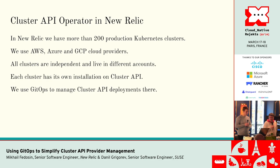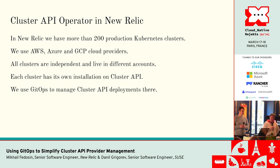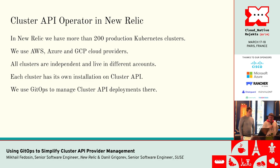I work at New Relic and we use this operator in our infrastructure. Our infrastructure is relatively big — we have more than 200 production Kubernetes clusters, about 300 in general, about 30,000 nodes, and we use three cloud providers: AWS, Azure, and GCP. For AWS we use EKS so we don't manage control planes there, but for Azure and GCP we manage those control planes ourselves with kubeadm Cluster API providers. All clusters are independent, existing in different accounts, so we have to deploy Cluster API everywhere on each cluster. Managing it with clusterctl is a huge burden, and that's why we adopted GitOps to manage all these installations with the Cluster API Operator.